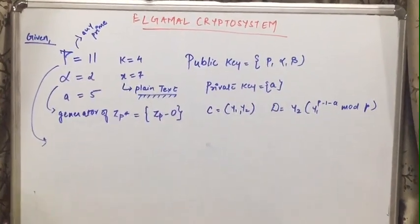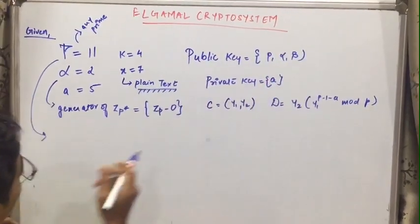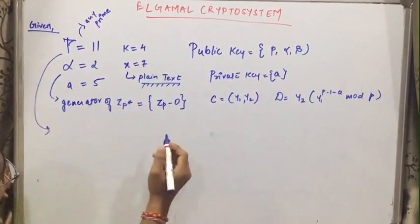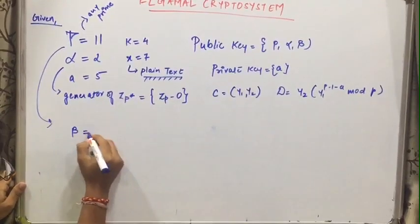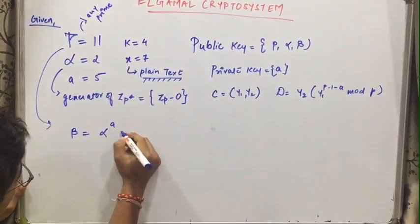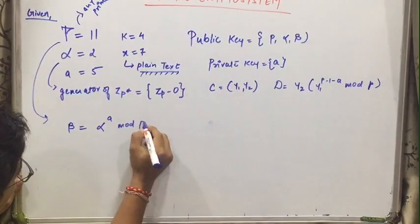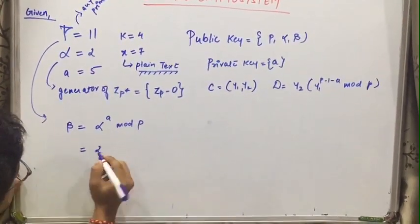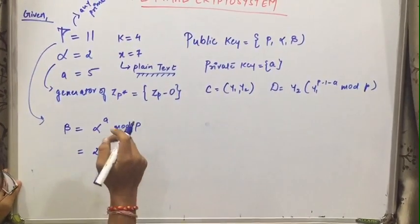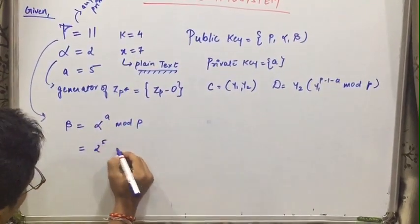Now as we know that Bob shares this p, alpha and beta to Alice. So now we will be doing the encryption. First we will find what is beta. Beta will be alpha rest to a mod p. So what is alpha? Alpha we have is 2. What is A? A is 5.